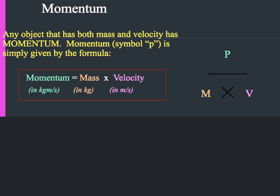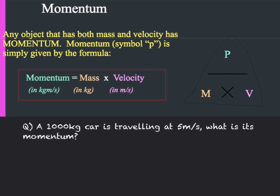Momentum is when an object has both mass and velocity, given by the following equation: momentum in kilogram metres per second equals mass in kilograms times velocity in metres per second. Momentum is given the symbol P, mass M, and velocity V. As a sample question: a 1000 kilogram car is travelling at 5 metres per second — what is its momentum?